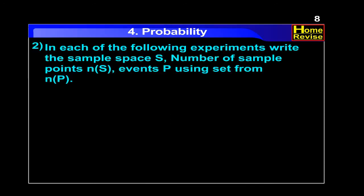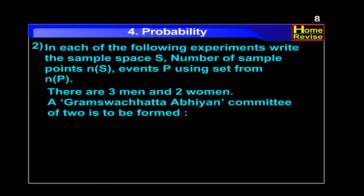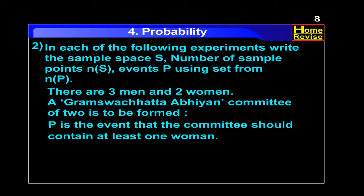In each of the following experiments, write the sample space S, number of sample points n of S, events, and n of E. There are three men and two women. A Gram Swachhata Abhiyan committee of two is to be formed. P is the event that the committee should contain at least one woman.